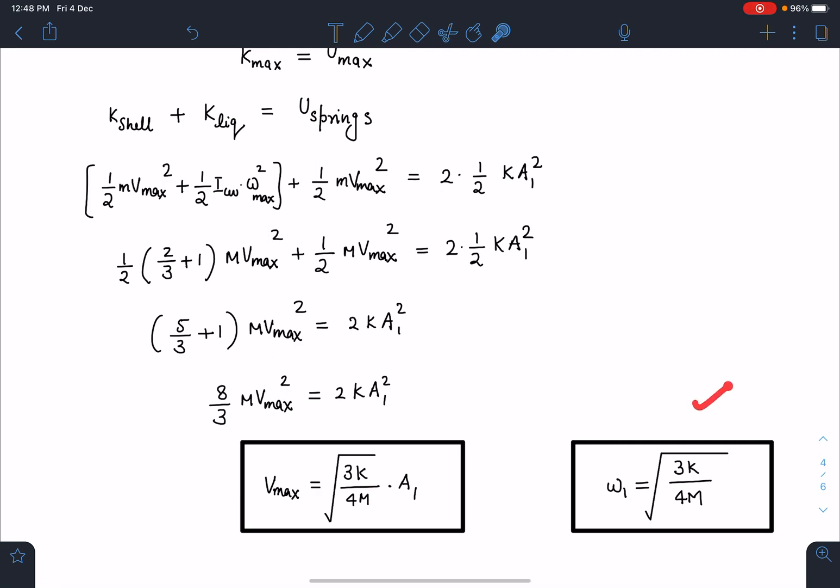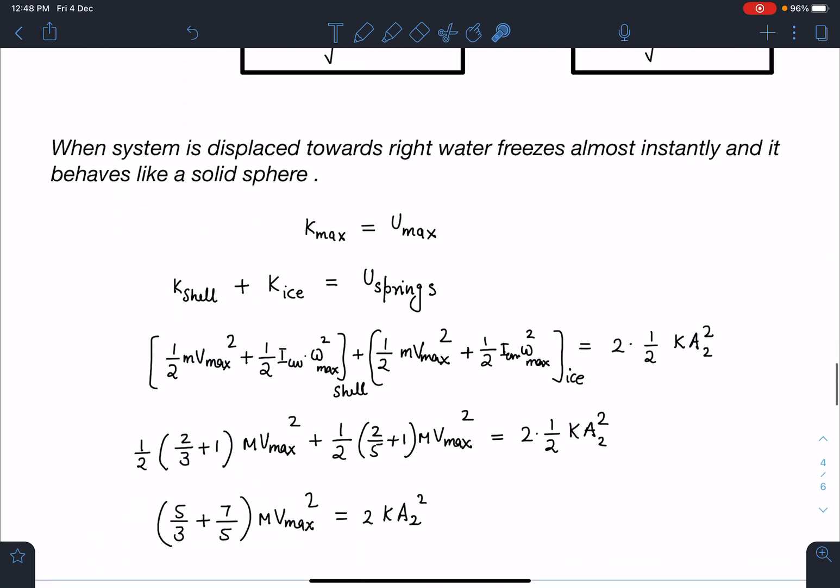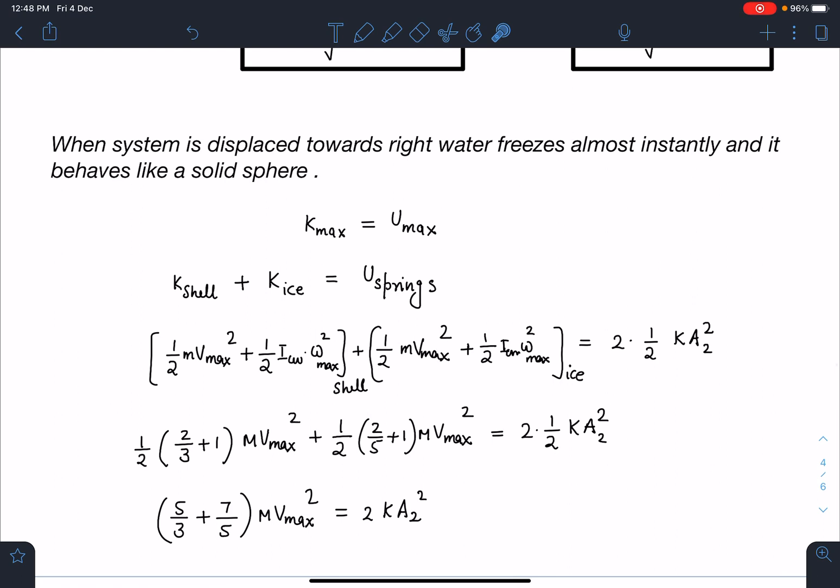Similarly, I can do the same thing here. When the system is displaced towards right, the water freezes almost instantly and behaves like a solid sphere. When I apply the same logic, K_max equals U_max. Kinetic energy will be due to the shell and due to the ice that water has converted into, and that should equal energy stored in the springs.